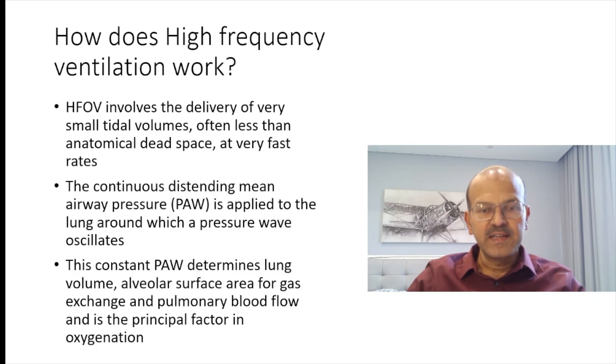The continuous distending or mean airway pressure is applied to the lung around which the pressure wave or amplitude oscillates. The constant mean airway pressure determines the lung volume as the lung recruitment and maintenance is there. We'll discuss it later. The alveolar surface area available for gas exchange is part of this, and the pulmonary blood flow is dependent on this as well.